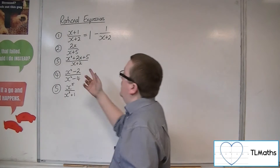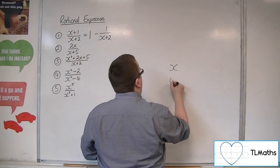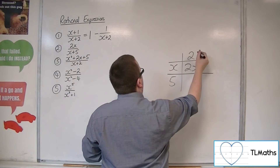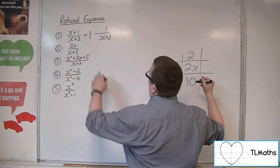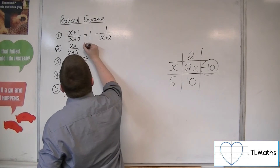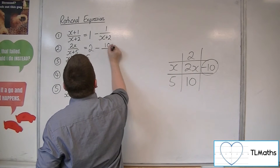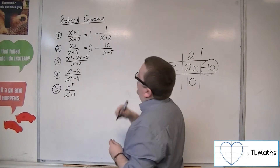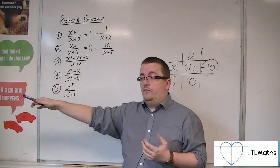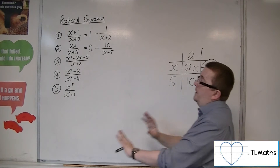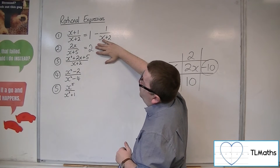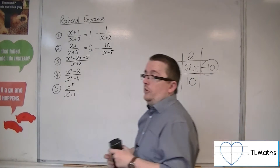Now doing 2x/(x+5): write x+5 on the left-hand side. x goes into 2x twice, giving 2. 2 times 5 is 10, but I don't have anything there, so I subtract 10. This gives 2 − 10/(x+5). For this curve, as x increases — or decreases in the negative direction — the curve tends towards y = 2. So y = 2 is a horizontal asymptote.